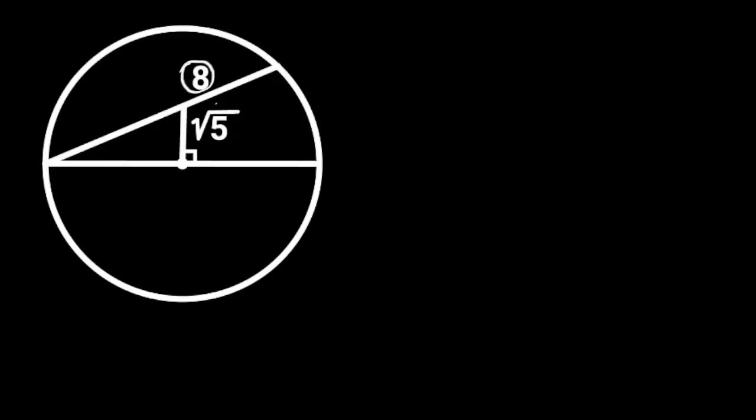This figure is a circle with a line segment of 8 units and another vertical line of length √5 units, perpendicular to the diameter of the circle. Find the area of the circle.